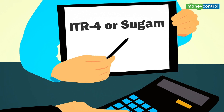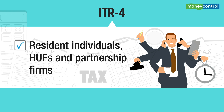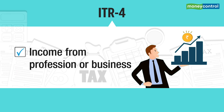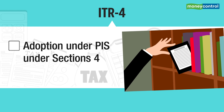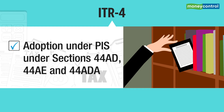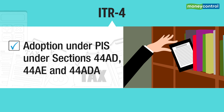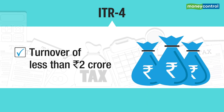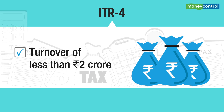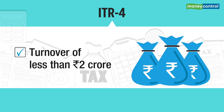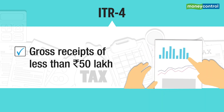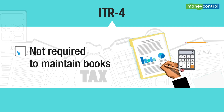ITR-4 or Sugam is for presumptive income. It can be used by resident individuals and HUFs, and partnership firms other than LLPs who had income from a profession or business in the previous financial year. It includes the presumptive income scheme under Sections 44AD, 44AE, and 44ADA of the Income Tax Act 1961. The presumptive income scheme applies to businesses with total turnover less than Rs 2 crore — use ITR-3 if it exceeds Rs 2 crore. It can also be used by eligible professionals with gross receipts less than Rs 50 lakh. The main advantage of opting for the presumptive income scheme is that you are not required to maintain books of accounts.